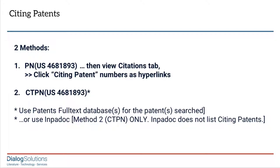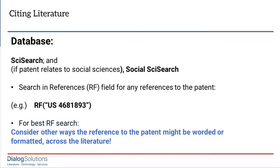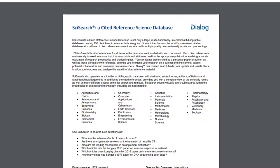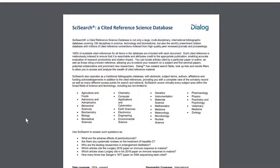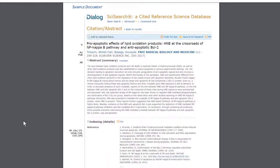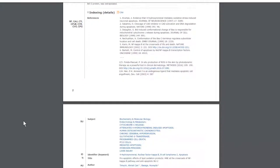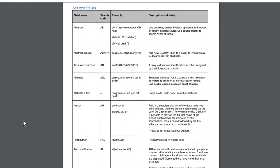The other type of forward citation would be the citing literature — that is, any kind of article or non-patent literature that cites US 4681893. This search is quite different, because citing literature is not recorded in the patent databases. You would instead go into one or more non-patent databases to search for references to this patent. The database to use is SciSearch, and possibly its related publication Social SciSearch, if the patent might be written about in social science literature. SciSearch is created especially for doing this kind of search to find citing articles.